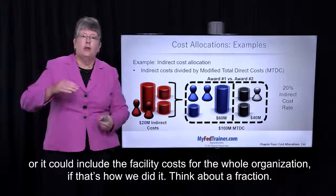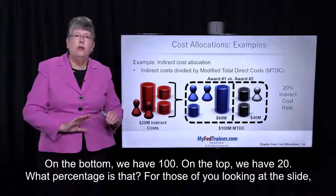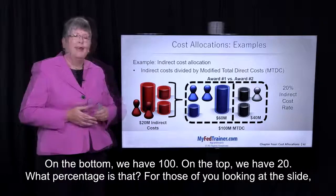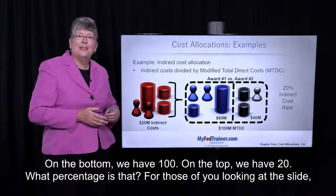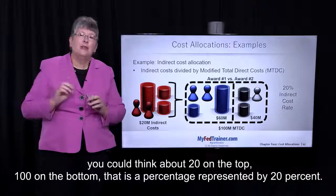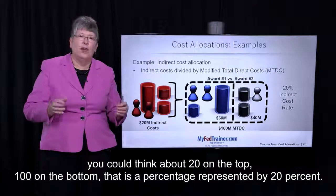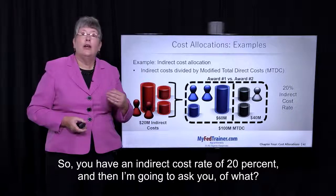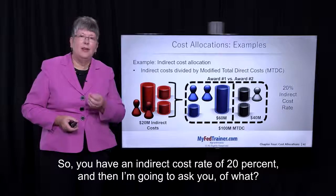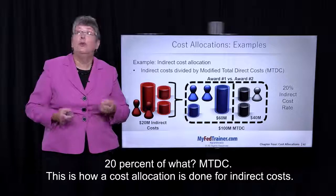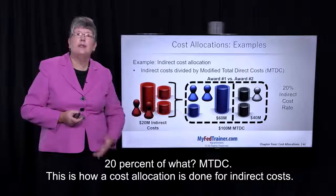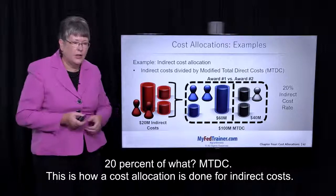Think about a fraction: on the bottom we have a hundred, on the top we have twenty. For those of you looking at the slide, twenty on the top and a hundred on the bottom is a percentage represented by twenty percent. So you have an indirect cost rate of twenty percent — but twenty percent of what? Twenty percent of MTDC. This is how a cost allocation is done for indirect costs.